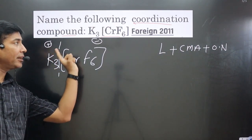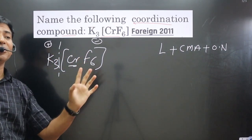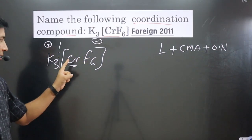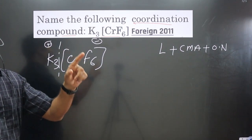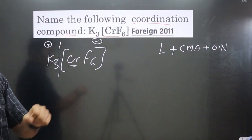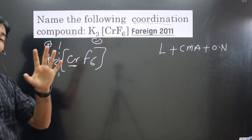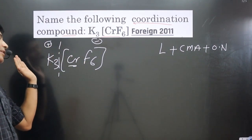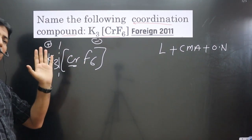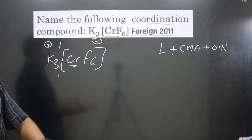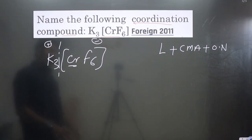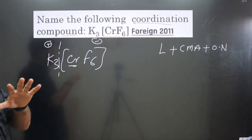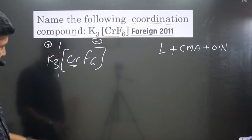Since the central metal atom is present in the anionic complex, we use its special name. For chromium in an anionic complex, we write 'chromate.' If it were in a cationic complex, we would use the common name as given in the periodic table.